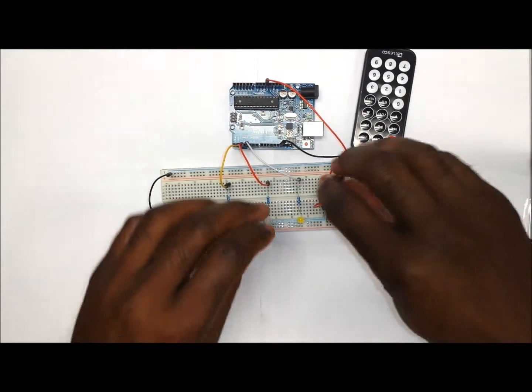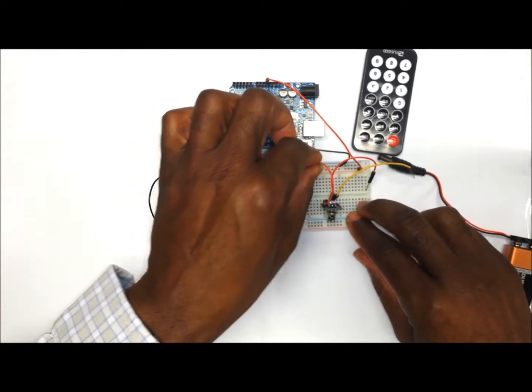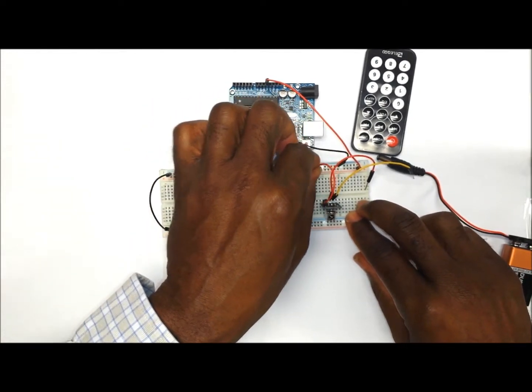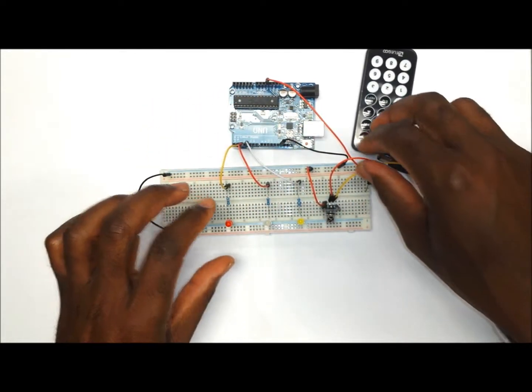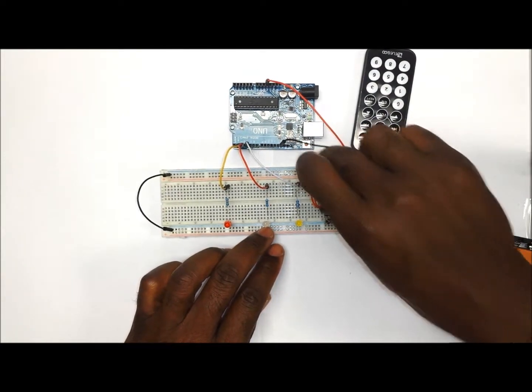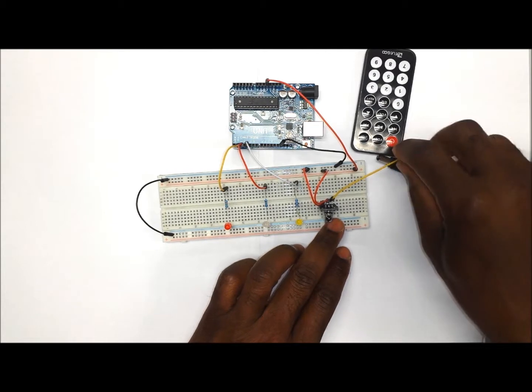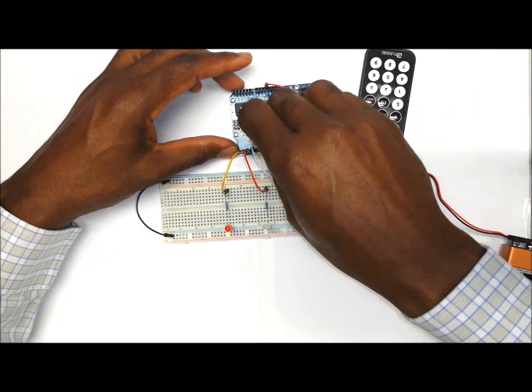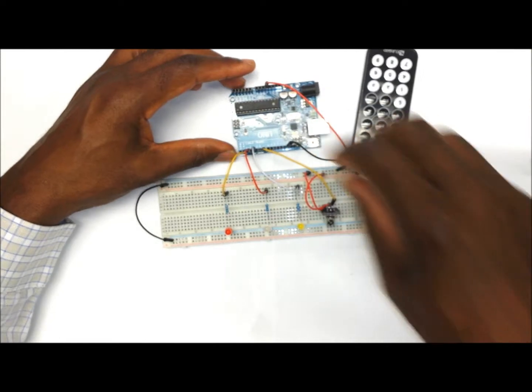So the first wire which is the ground or the negative goes to the negative portion of the breadboard. The second wire which is power goes to the positive rail of the breadboard. And then the signal wire will go to pin number seven on the Arduino.